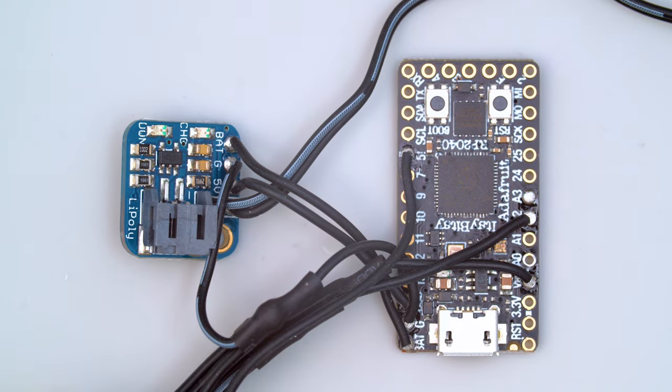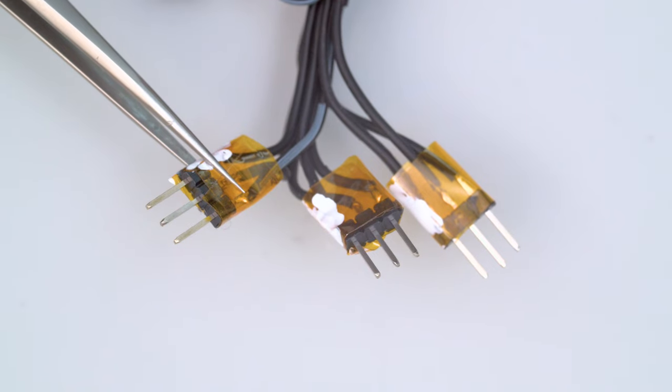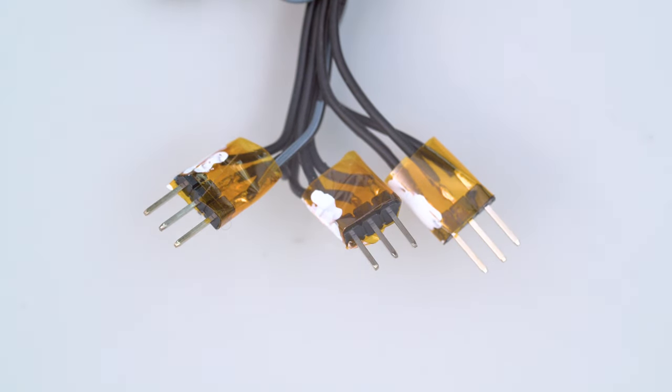The itsy bitsy is wired up to a lipo backpack so you can recharge the battery over USB. Strips of header pins are soldered to the wires and insulated using Kapton tape.